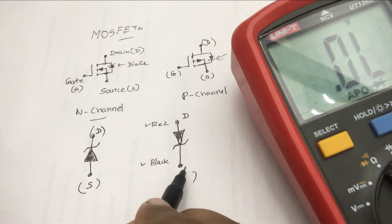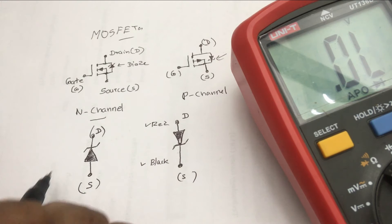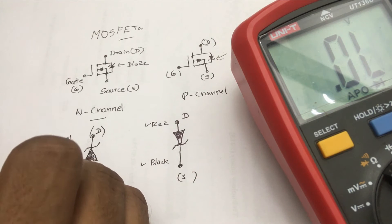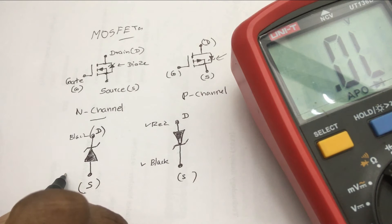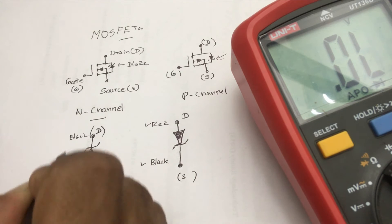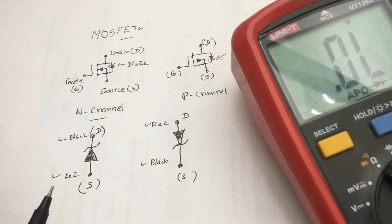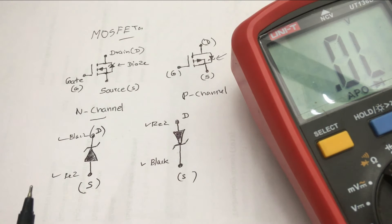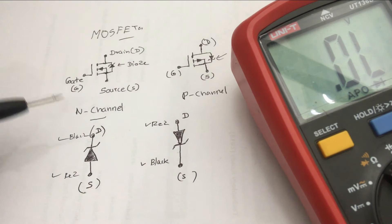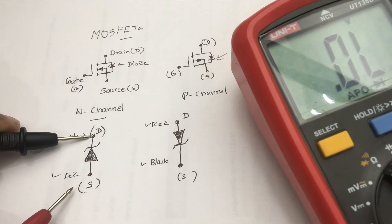Now you have an idea about testing drain and source pins of MOSFETs — this is the most suitable way to find whether the MOSFET is P-channel or N-channel. For P-channel MOSFETs, the multimeter reading must be shown when the red pin is connected to drain and the black pin is connected to source. If you connect the other side, there should not be a reading. For N-channel MOSFETs, the multimeter reading must be shown when the red pin is connected to source and the black pin is connected to drain. If you connect the other side, there should not be a reading.